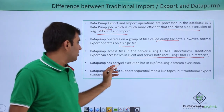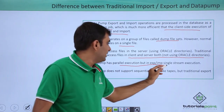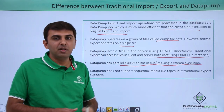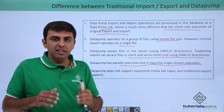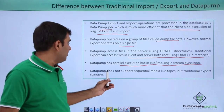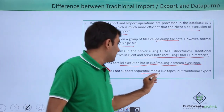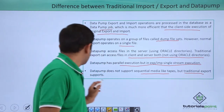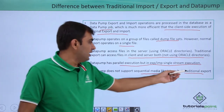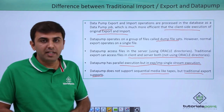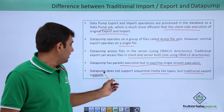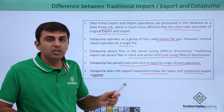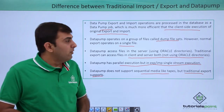Data Pump has parallel execution, but traditional export/import uses single-stream execution. With Data Pump you can use the parallel option which generates multiple dump files at the same time. Data Pump does not support sequential media like tapes, but traditional export supports it — from traditional export you can directly store files to tape, but with Data Pump you cannot directly store your dump file to tape.